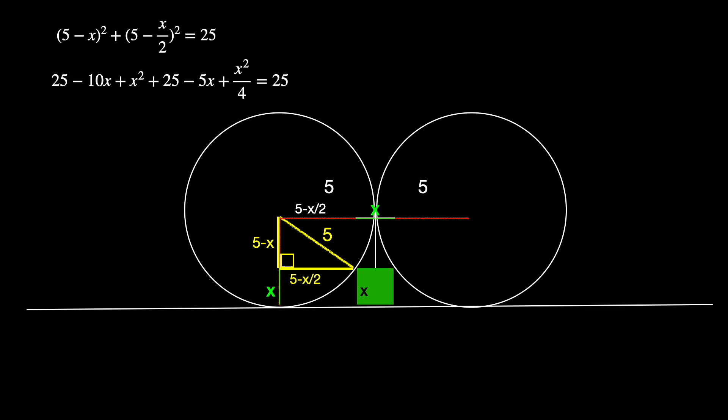When we multiply the two binomials, the leftmost binomial gives 25 minus 10x plus x squared, and the rightmost gives 25 minus 5x plus x squared over 4.